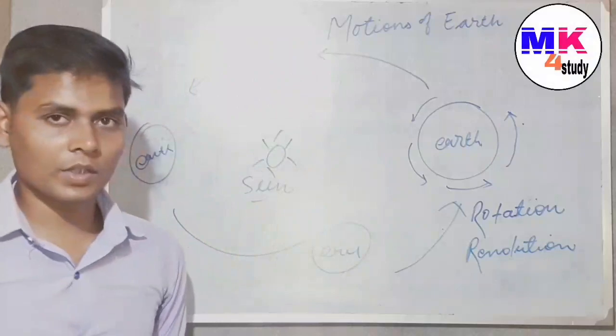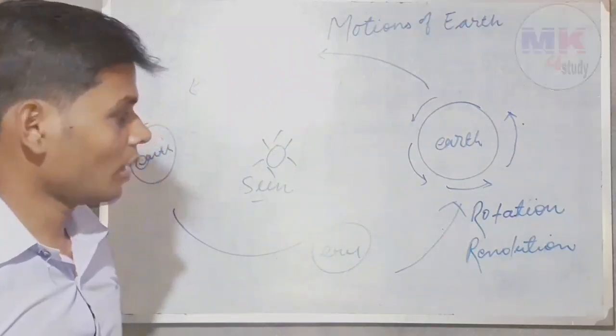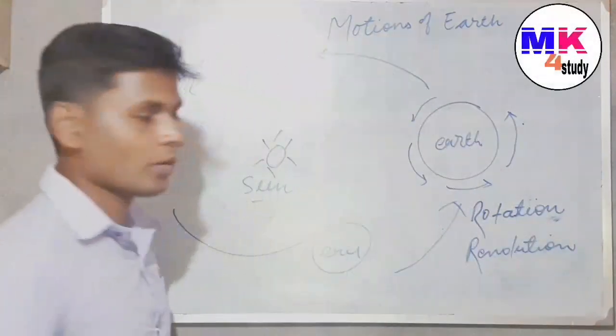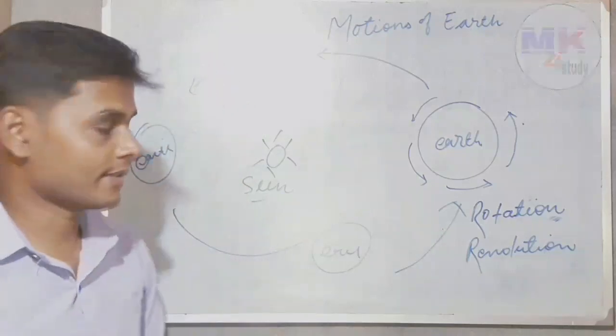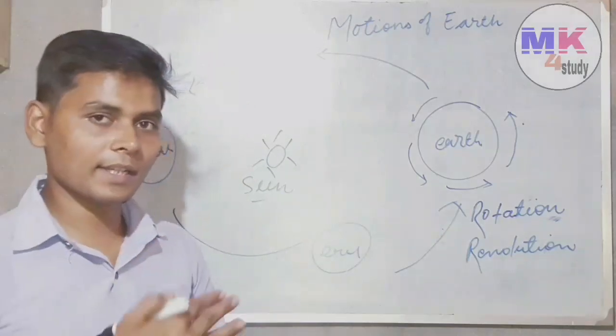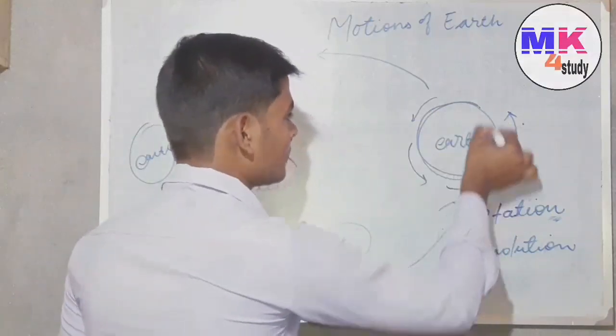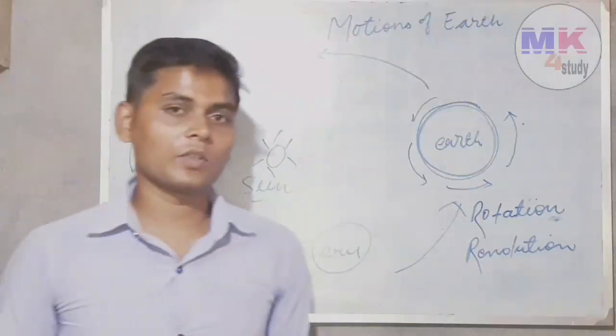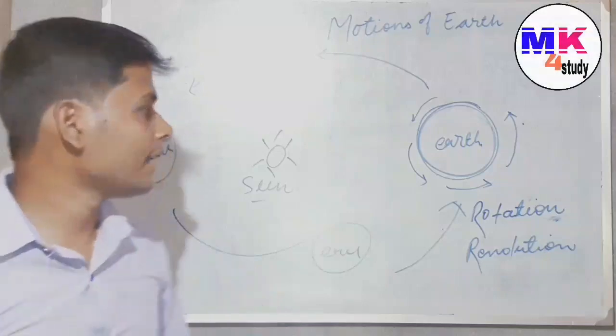So what is rotation and revolution? What are the differences between these two words? Let's notice one by one. Rotation is the movement of earth in its own axis. When earth moves in its own axis, this movement is called rotation.